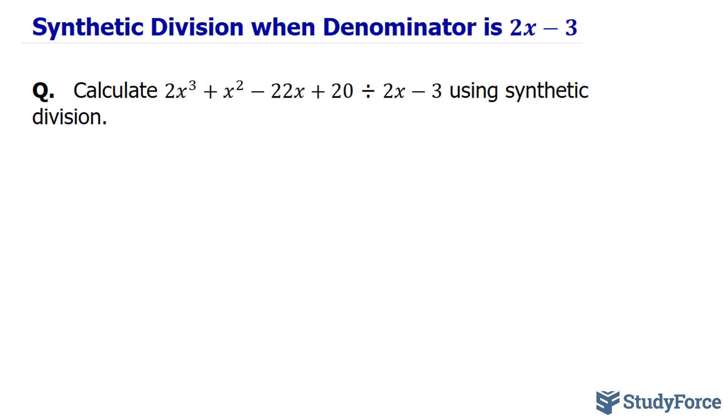Let's begin by visualizing this as a fraction, and there should be parentheses around this expression. So we have 2x cubed plus x squared minus 22x plus 20, and that's all over 2x minus 3.